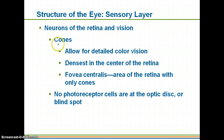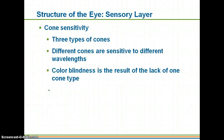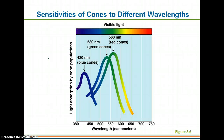Cones — I always remember cones for color. These allow for detailed color vision and are densest in the center of the retina. There's an area called the fovea centralis that contains only cones, which is why we have much better perception of things directly in front of us. There are no photoreceptor cells at the optic disc, your blind spot. There are three types of cones, sensitive to three main wavelengths — red, green, and blue. Colorblindness depends on which type of cone is missing.